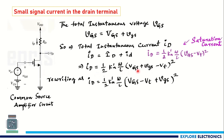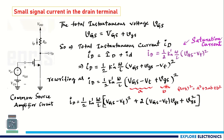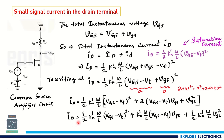Rearranging the terms, we treat A = (VGS − VT) and B = vgs, then apply the (A + B)² expansion. Expanding gives three terms: A² = (VGS − VT)², the cross term 2AB = 2·(VGS − VT)·vgs, and B² = vgs². Multiplying through by (1/2)·k'n·(W/L), the instantaneous current becomes: iD = (1/2)·k'n·(W/L)·(VGS − VT)² + k'n·(W/L)·(VGS − VT)·vgs + (1/2)·k'n·(W/L)·vgs².